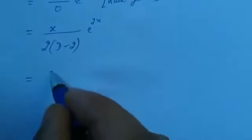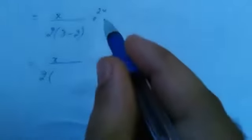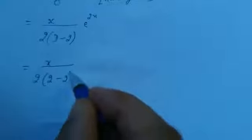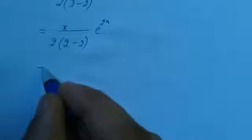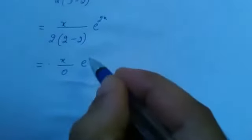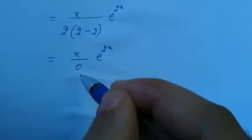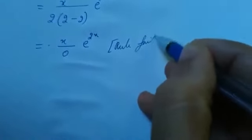Again, the coefficient of x is 2, so we replace D with 2, getting x by 2 into (2 minus 2) into e raised to 2x. That gives x by 0 into e raised to 2x. Again the denominator is 0, so the rule fails again.